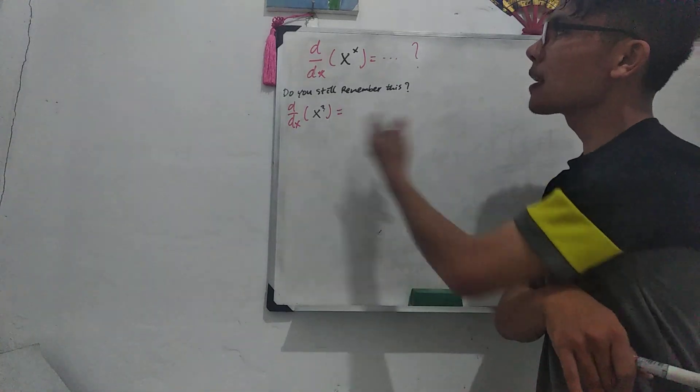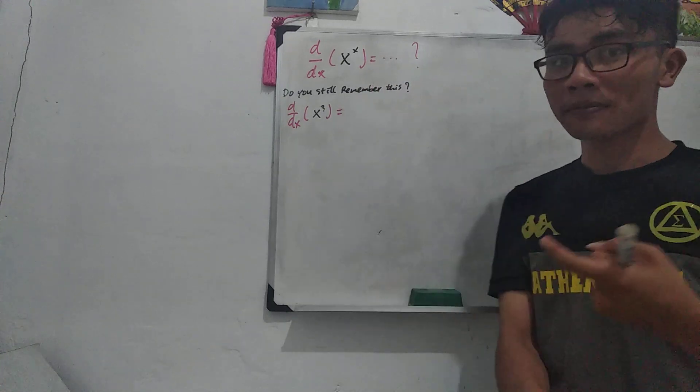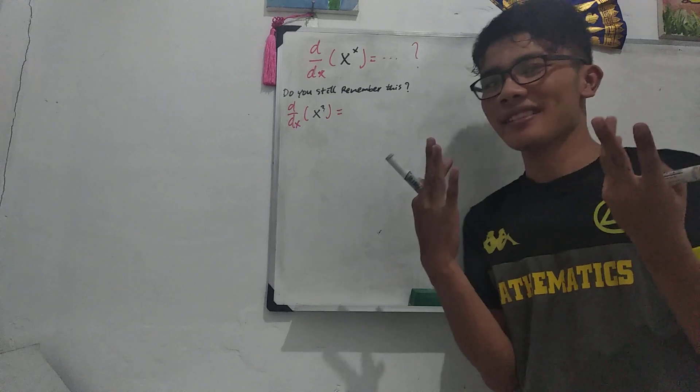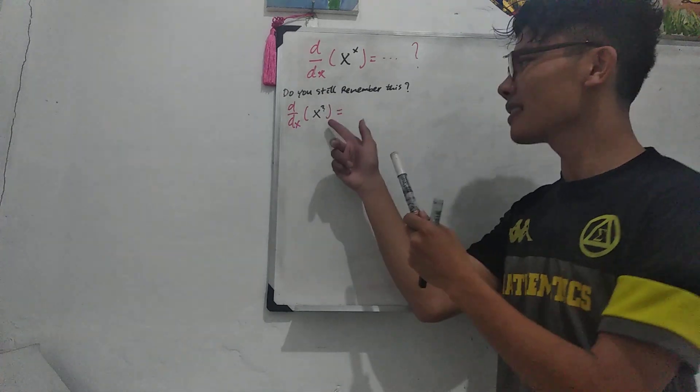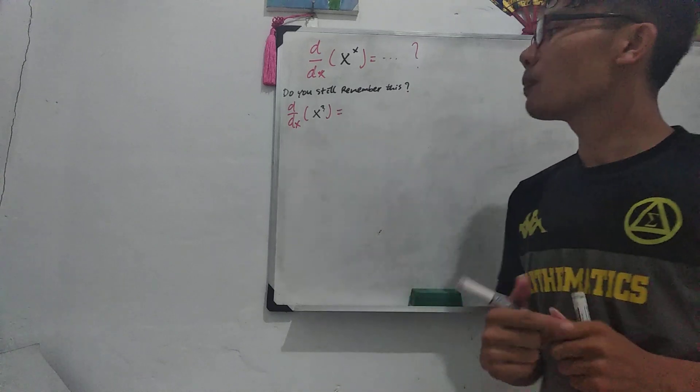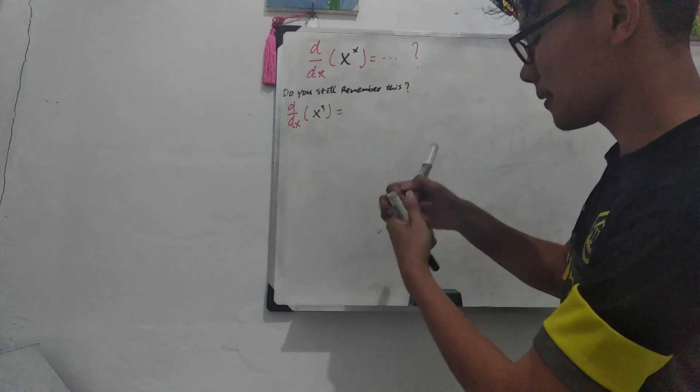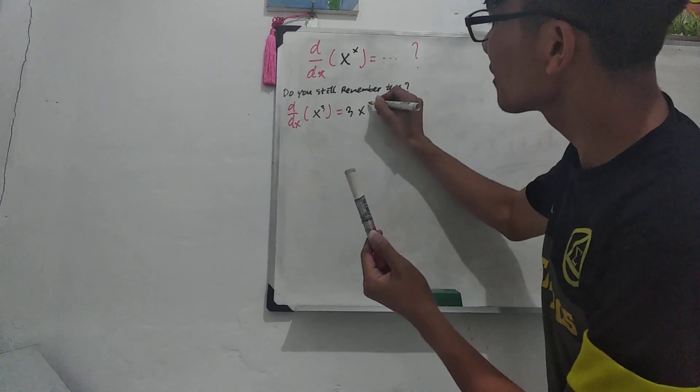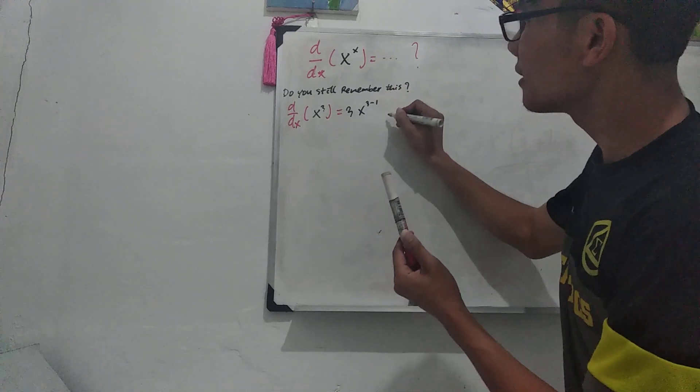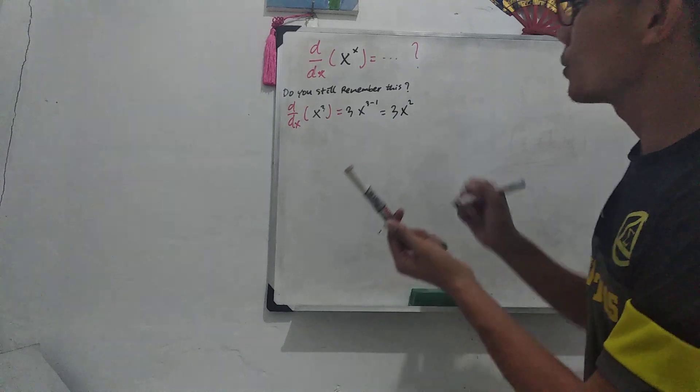Okay, but before I do this, I want you to remember again. I hope you still remember, and of course you still remember. If I have a function like this, a simple function like this, x to the power of 3, so easily I can find the derivative of this. It's gonna be 3x to the power of 3 minus 1.